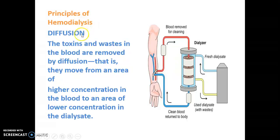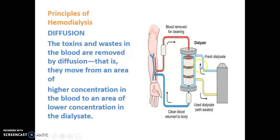The first principle of hemodialysis is diffusion. The toxins and waste in the blood are removed by diffusion — they move from an area of higher concentration in the blood to an area of lower concentration in the dialysate fluid. The concentration of waste in patient blood is higher compared to the dialyzer fluid, so waste and toxins move from the patient blood into the dialyzer. This is how the blood gets cleaned.